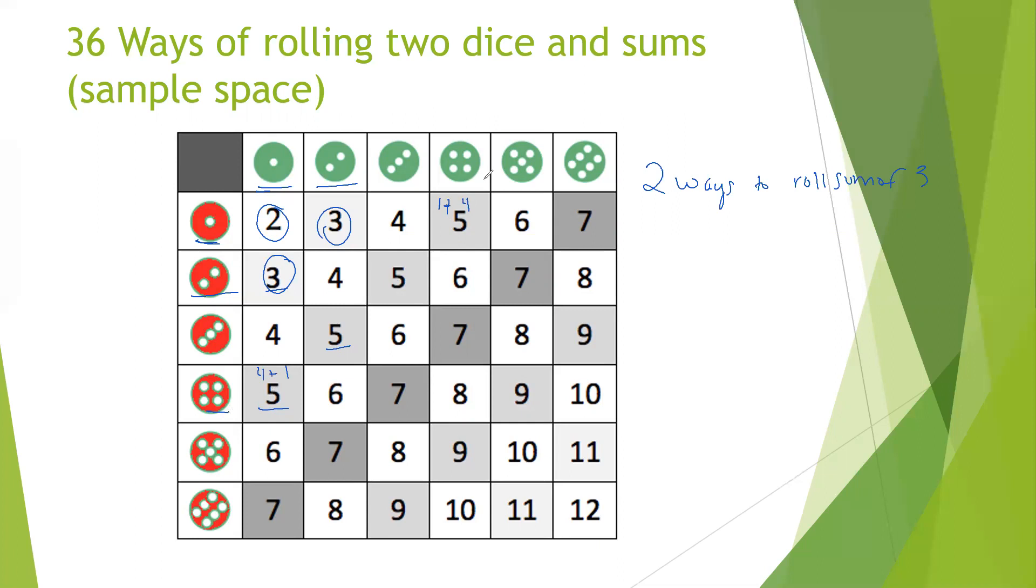And so if you count it up or multiply, you have six numbers on the green and six numbers on the red, and so you have six times six, which is 36 ways to roll two dice. And then we have one, two, three, four—four ways to roll a sum of five.